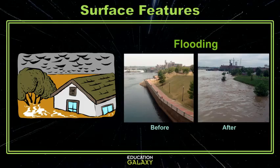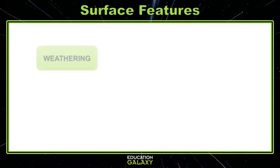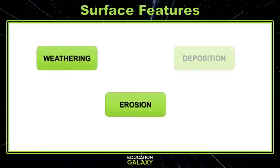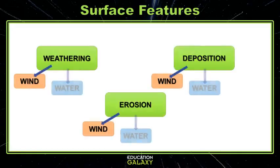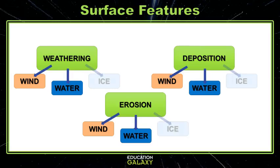But let's take a look at some changes that have happened over thousands of years. Slow changes can either be weathering, erosion, or deposition, and all three of these can be caused by wind, water, and ice. Let's take a closer look at each one.